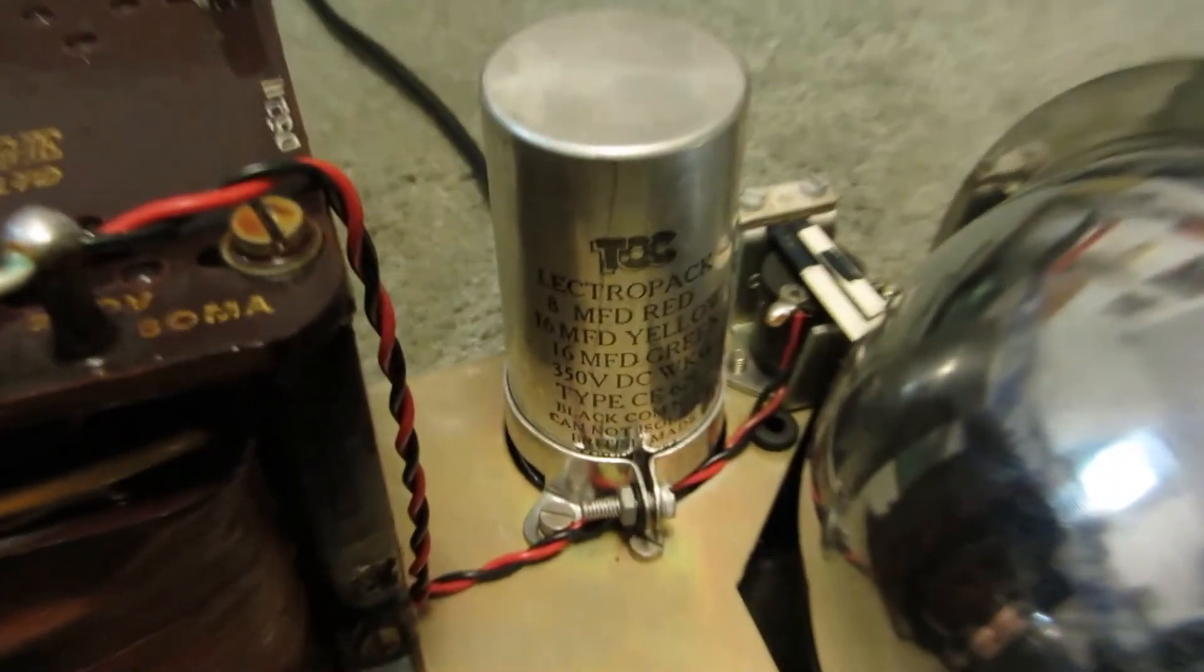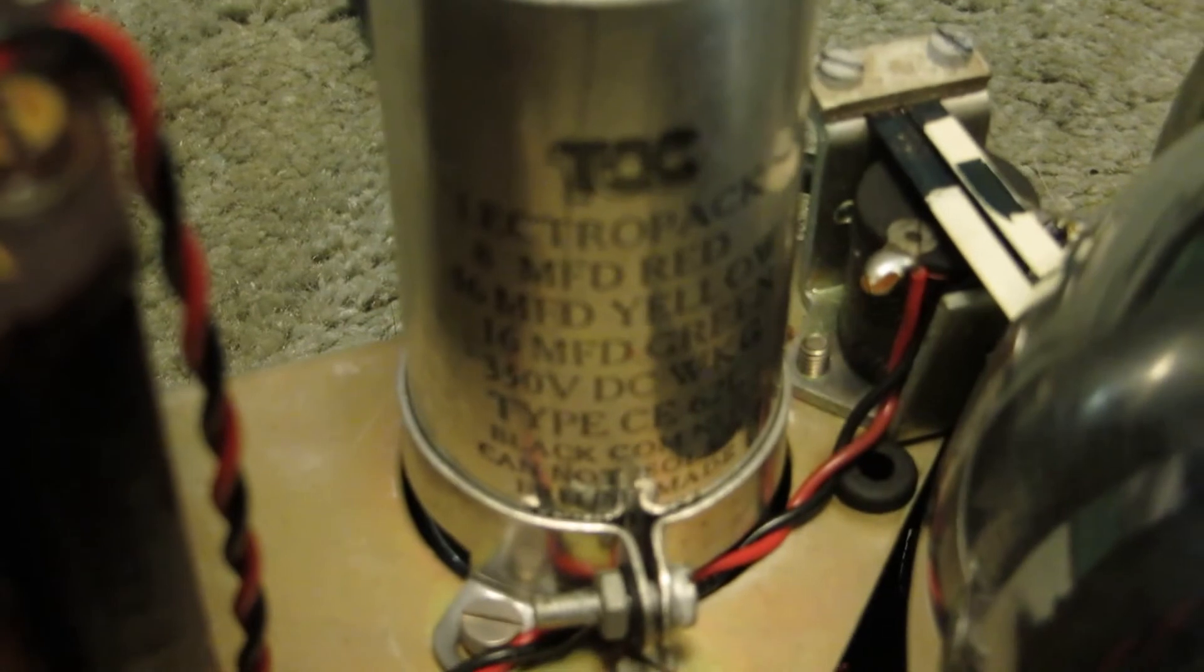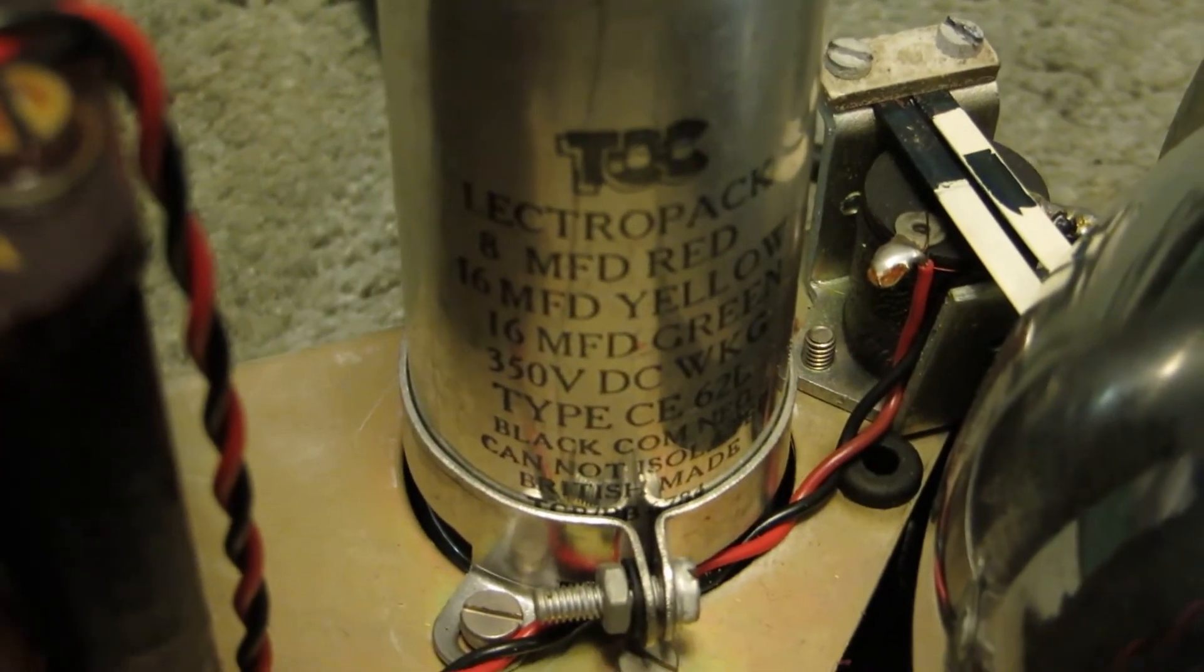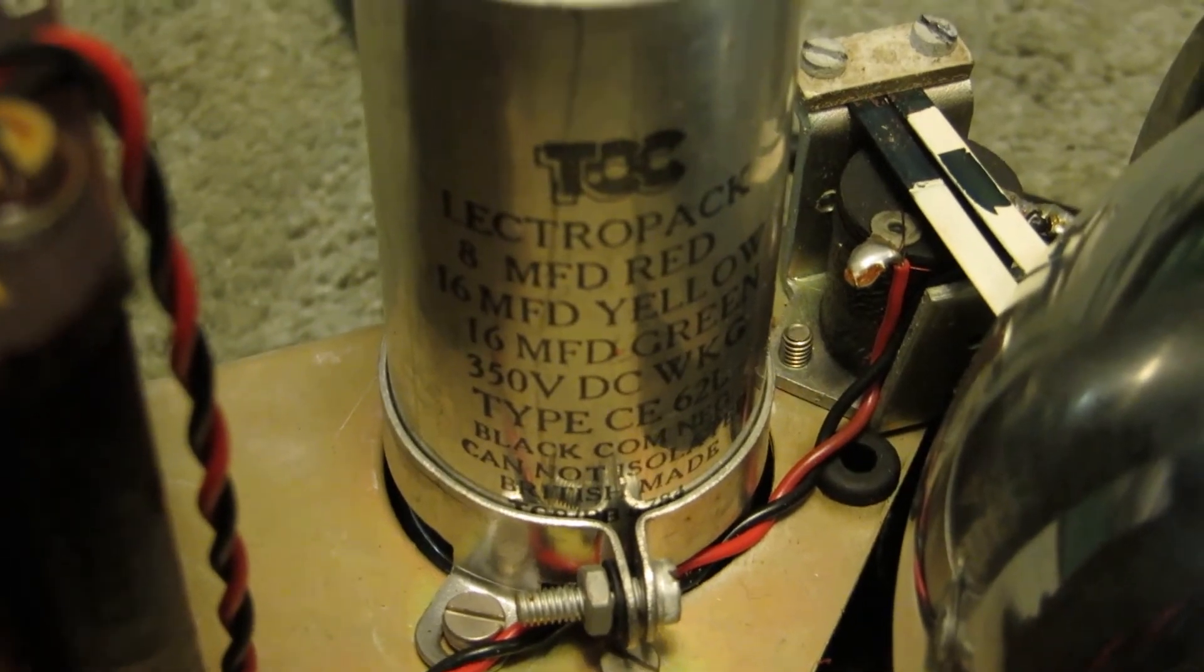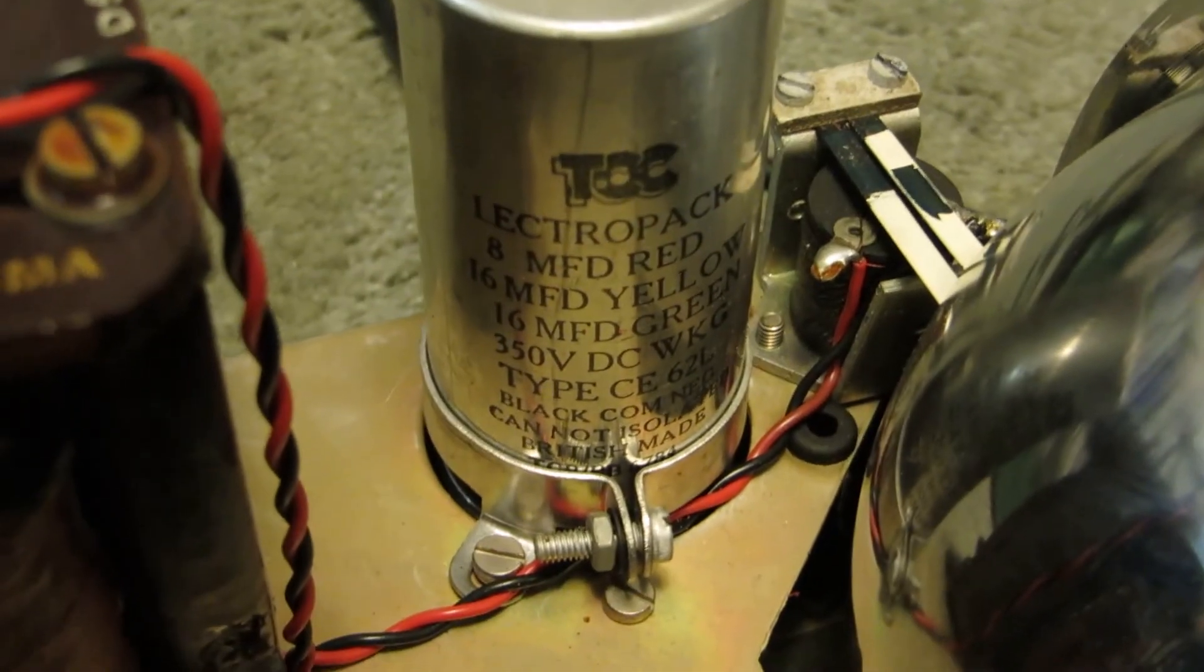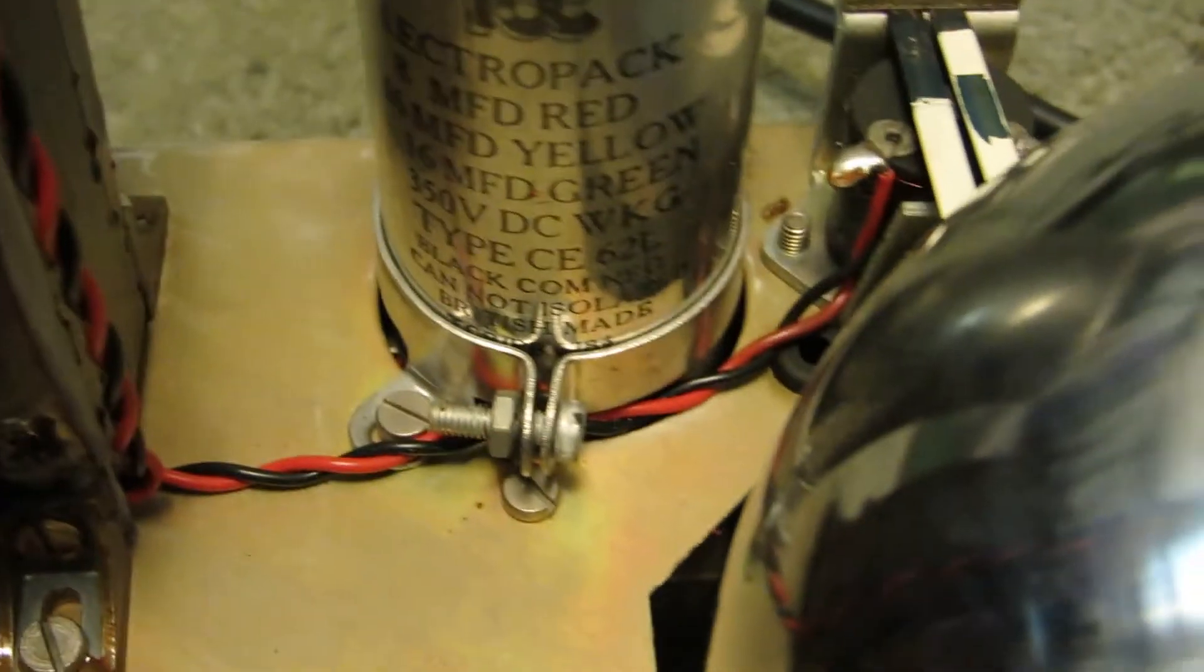What do we get for a capacitor down there? 8 MF, 350 volt. So it's probably got 4 or 5 leads coming out of there.